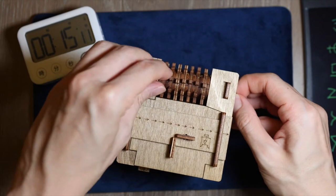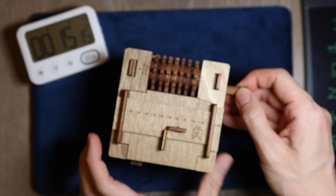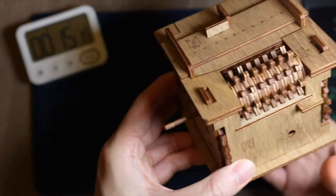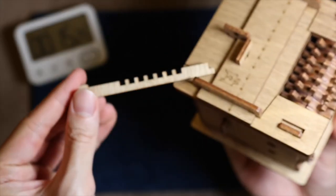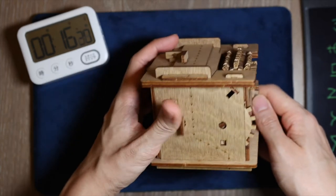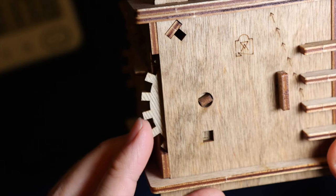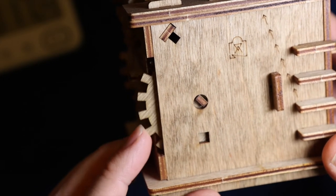So once the combination lock is properly aligned with the combination input correctly, this locking mechanism or the bolt should be able to be removed freely. Like so. Now once the locking mechanism is the bolt is taken out, these larger gears can be turned freely.